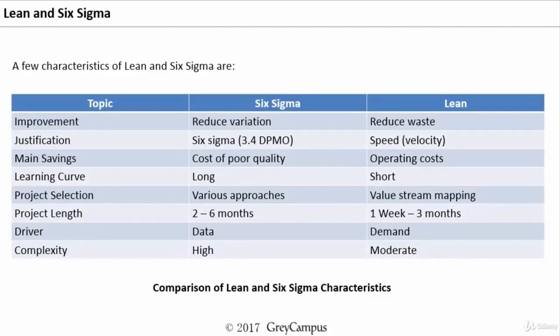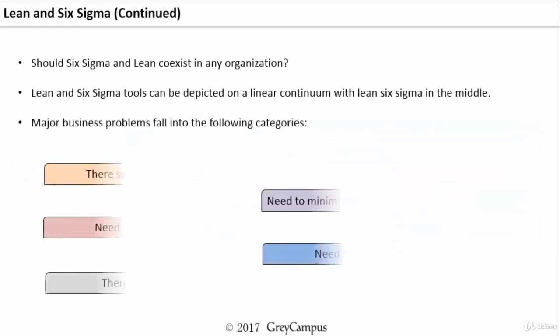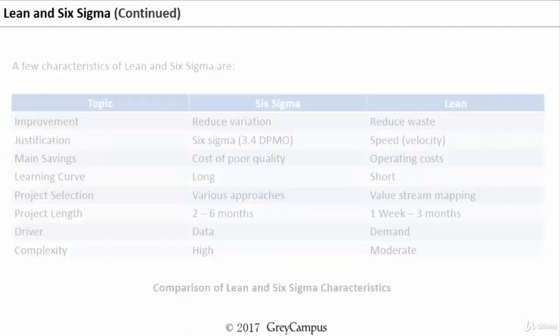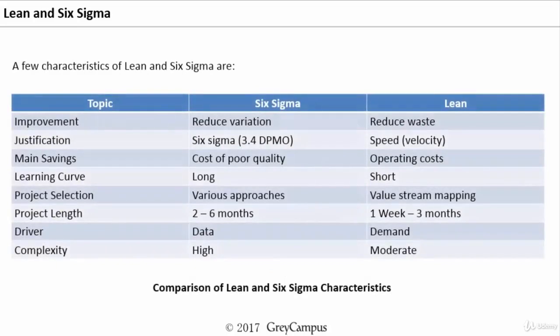One of the major questions asked is: what is the difference between Lean and Six Sigma? When do we use the Six Sigma methodology and when do we go for Lean? It is better we understand and do a comparative study of under which circumstances we will go for Six Sigma and in which cases we will go for Lean.